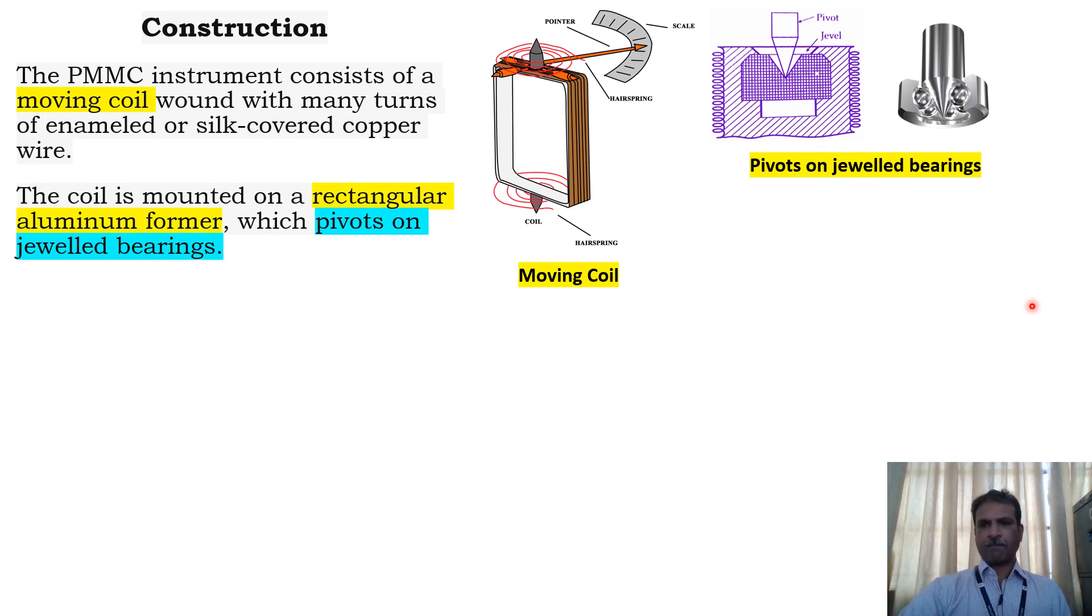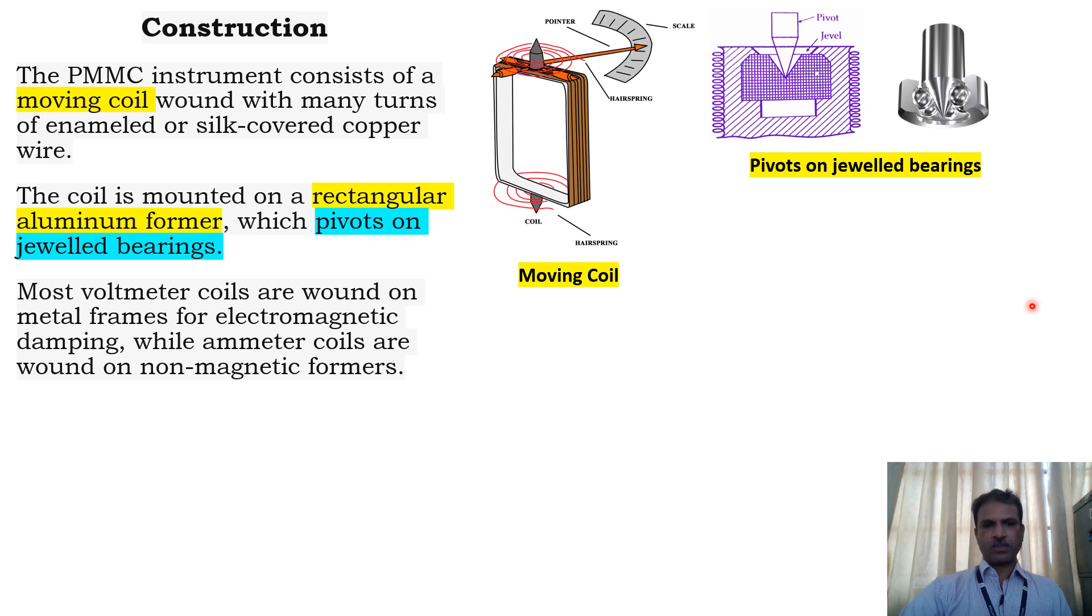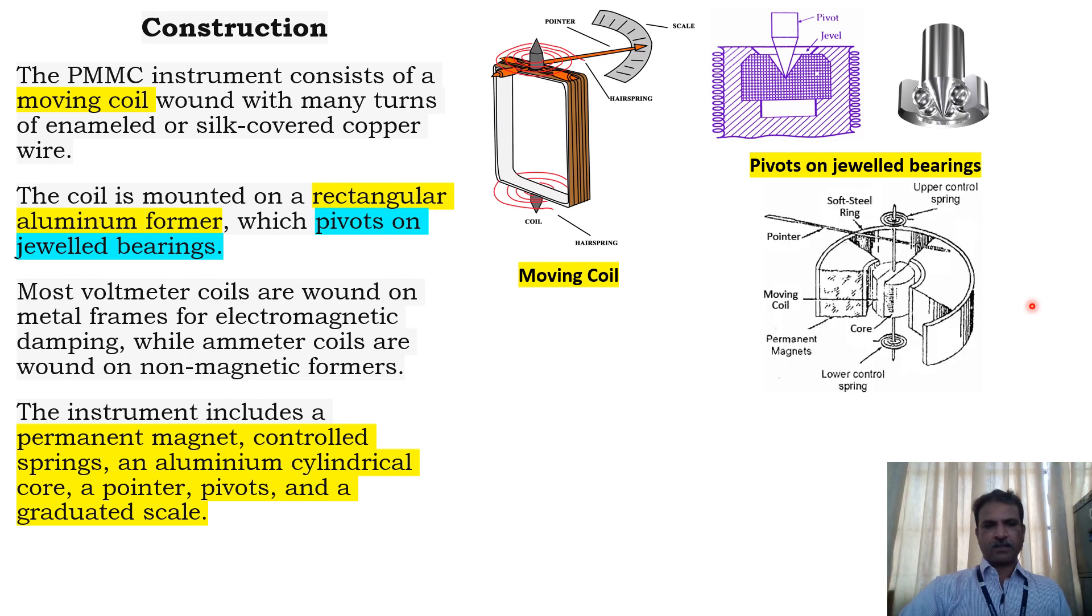Most voltmeters are wound on metal frames for electromagnetic damping, while ammeter coils are wound on non-magnetic formers. The instrument includes permanent magnet, controlled springs, aluminum cylindrical core, a pointer, pivots, and a graduated scale.